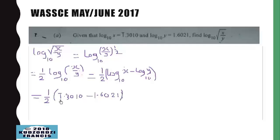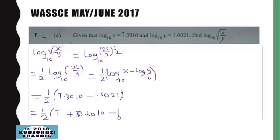We know the mantissa and the characteristic, so in logarithm we deal with them separately. We separate them: one over two into brackets — the first characteristic is 1, plus the first mantissa 0.3010, then minus the characteristic 1, minus the mantissa 0.6021. We note the mantissa can never be negative.